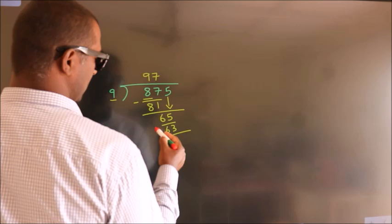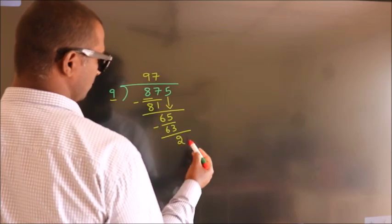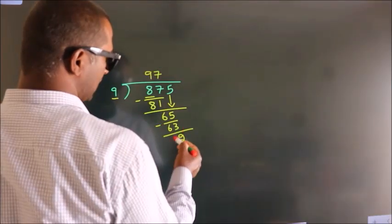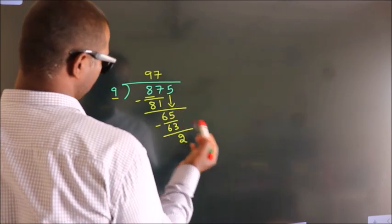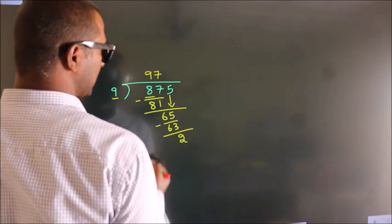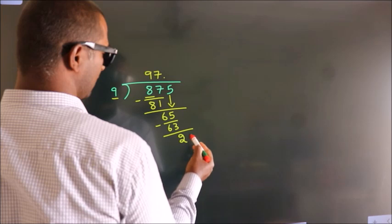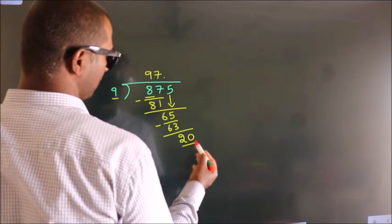Now we subtract, we get 2. After this, no more numbers to bring it down. So what we do is, we put dot, take 0. So 20.